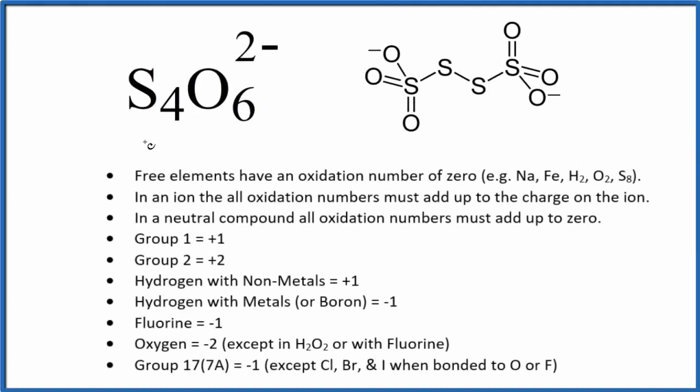Let's find the oxidation numbers for the sulfur here in S4O6 2-. This is the tetrathionate ion. We're going to do it two ways.